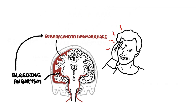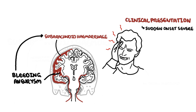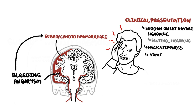The classic clinical presentation is a sudden onset, severe headache — the worst headache ever. Some people also describe it as a blow to the back of the head. They may also describe what's called a sentinel headache, which is a severe headache preceding the actual rupturing of the aneurysm. Patients may also have neck stiffness, vomiting, and an altered level of consciousness or loss of consciousness.